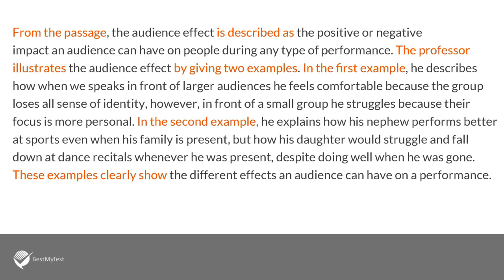From the passage, the audience effect is described as the positive or negative impact an audience can have on people during any type of performance. The professor illustrates the audience effect by giving two examples. In the first example, he describes how when he speaks in front of a large audience, he feels comfortable because the group loses all sense of identity. However, in front of a small group, he struggles because the focus is more personal. In the second example, he explains how his nephew performs better at sports when his family is present, but how his daughter would struggle and fall down at dance recitals whenever he was present, despite doing well when he was gone. These examples clearly show the different effects an audience can have on performance.